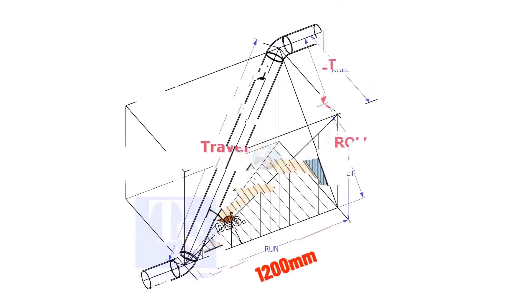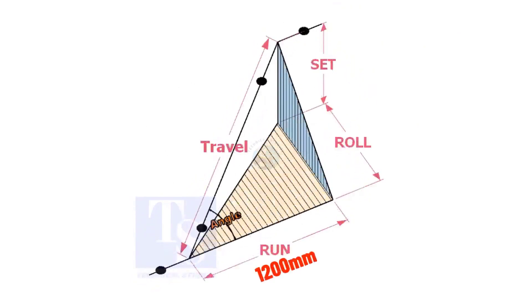Assume that the run is 1200 mm, set is 1000 mm, and the roll is 800 mm. Calculate the travel length.